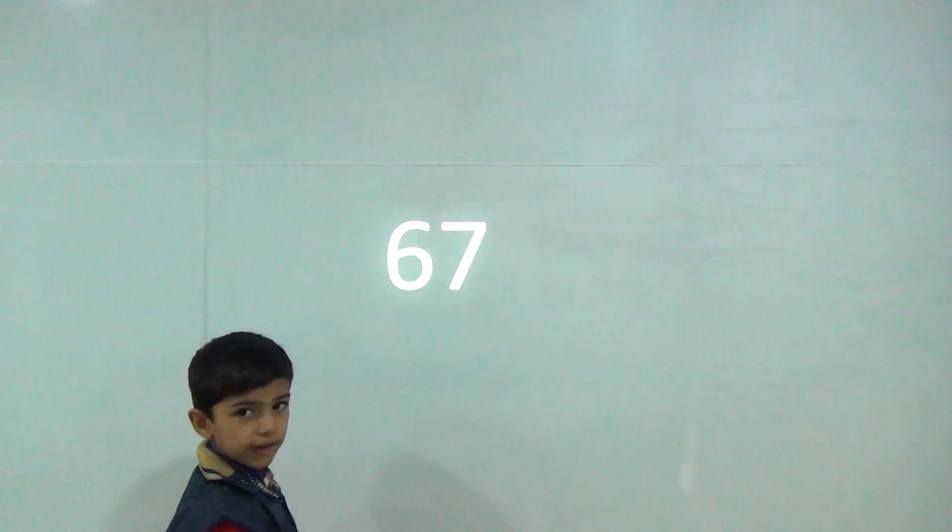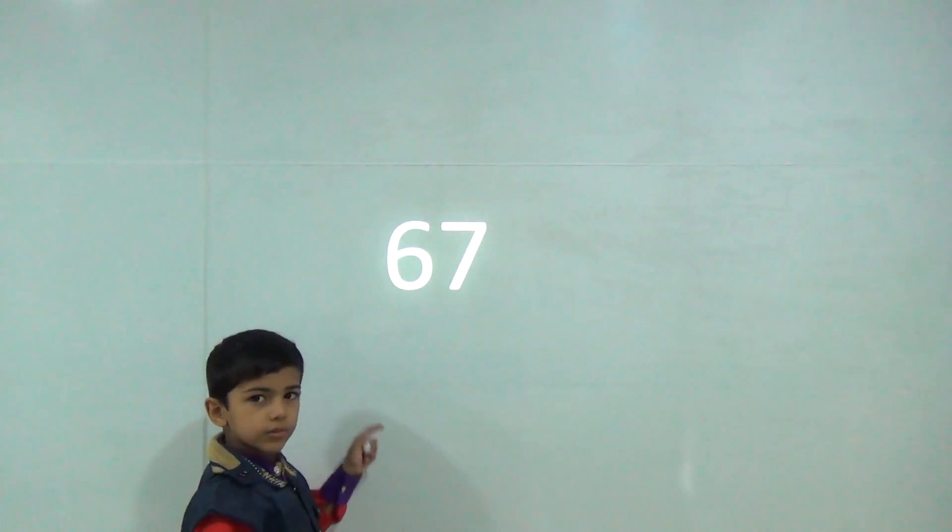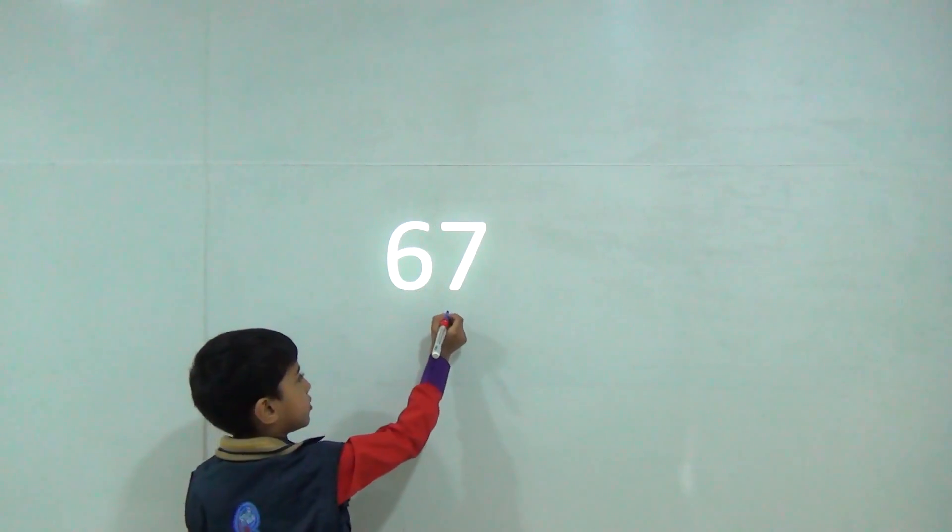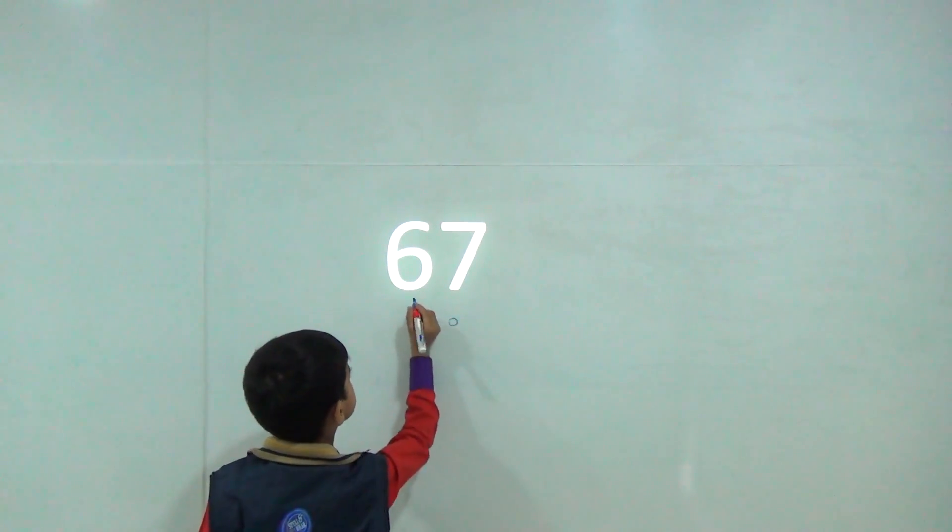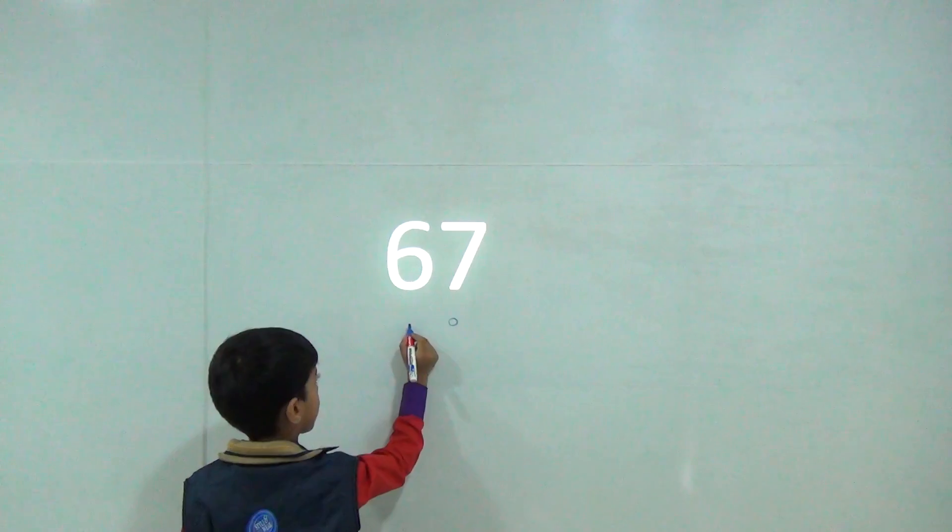7's place value is 7. 6's place value is 16, and 7 is standing on ones. 6 is standing on tens.